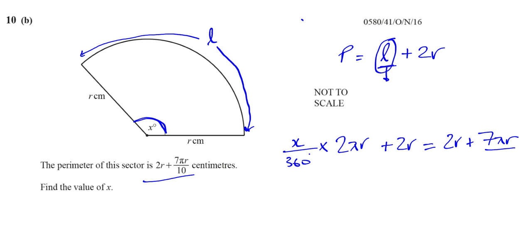We want to find what x is. Let's get rid of this plus 2r. If we subtract 2r from this side, we have to subtract it from this side. Then these will disappear, so you're left with 2πrx over 360 equals 7πr over 10.